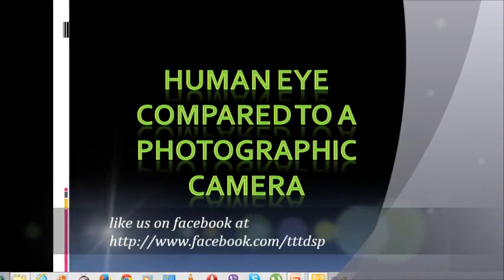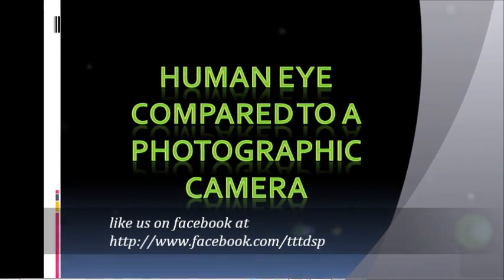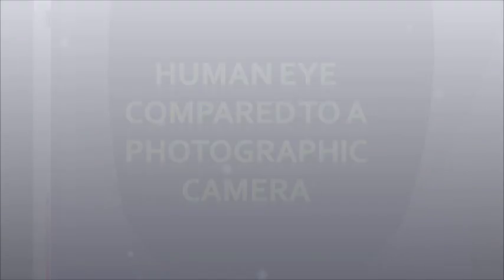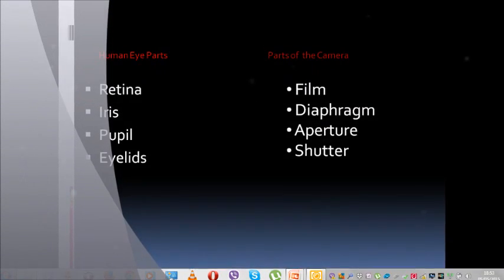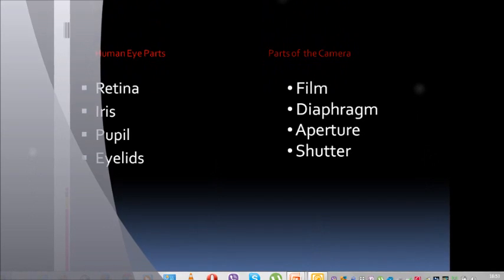Human eye compared to photographic camera. Human eye parts: retina, iris, pupil, eyelids.